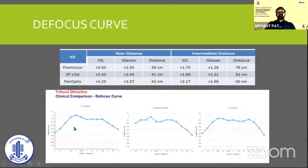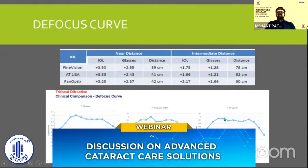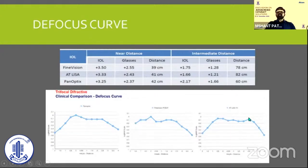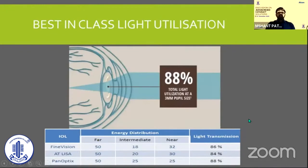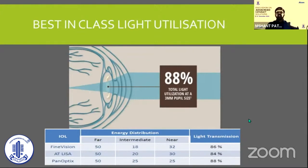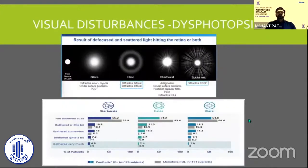Comparing the defocus curve with other trifocals, there are no peaks and troughs — it is a very nice plateau maintained right from distance through intermediate to near vision. This is what we wanted. Additionally, 88% of the total incident light at a 3 mm pupil size is utilized. Recall that 20% of light was wasted in traditional bifocals; this has come down by about seven to eight percent, contributing significantly to less dysphotopsia than expected.